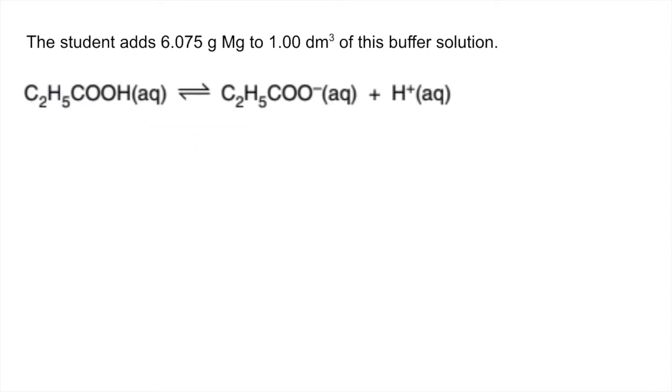In the second part, the student added that many grams of magnesium to 1 dm³ of the buffer. The magnesium is going to react with the H+ ions in the buffer and they will reduce, so the buffer will move more to the right. More of that propanoic acid will dissociate, so its moles will go down and its concentration will go down. The salt concentration is going to go up. We can work out how much by looking at the moles of magnesium that's been added.